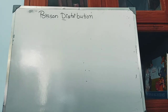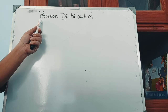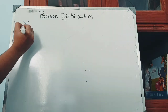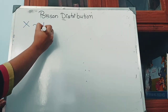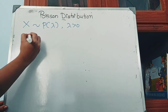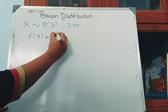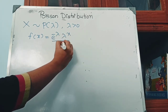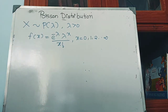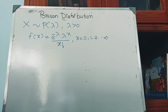Today, I will explain a special type of discrete probability distribution known as Poisson distribution. Let capital X be a discrete random variable. Then X is said to follow Poisson distribution with parameter lambda, where lambda is greater than 0, if it has the PDF: f(x) = e^(−λ) · λ^x / x!, where x is from 0 to infinity.